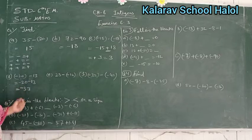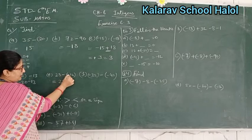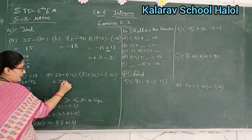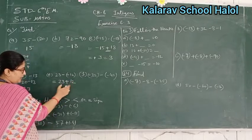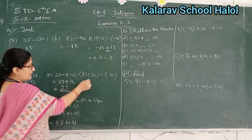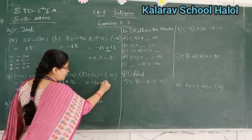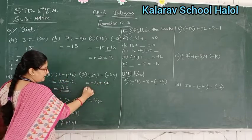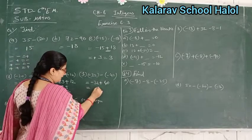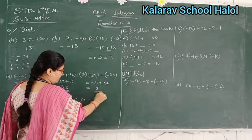Here both signs are minus, so the answer is minus. Then for question 1e: minus 32 minus minus, which becomes plus 40. Here the signs are opposite, so we do subtraction. 40 minus 32 — the bigger number has sign plus, so the answer is plus 8, written as 8.